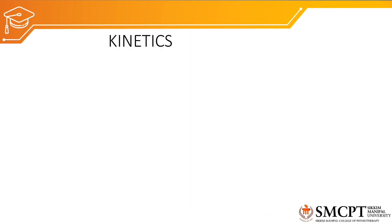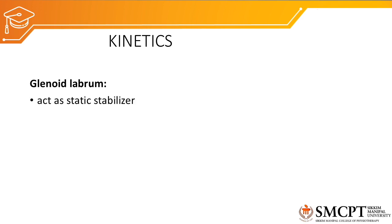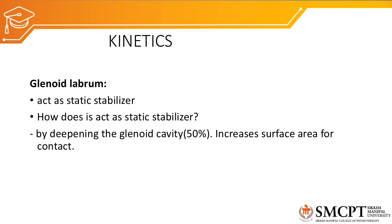Now, the kinetics of the shoulder complex. There are two important topics here: static stabilizers and dynamic stabilizers of the glenohumeral joint. First, the static stabilizers. The first structure is the glenoid labrum — a rim around the glenoid cavity that acts as a static stabilizer by deepening the glenoid cavity. Because of the glenoid labrum, 50 percent of the depth of the glenoid cavity is increased, and it also increases the area of contact for the humeral head.